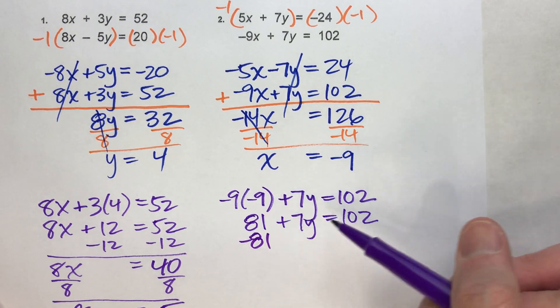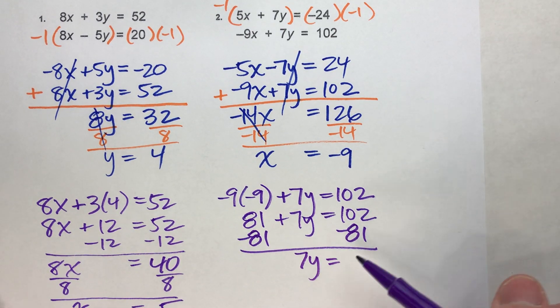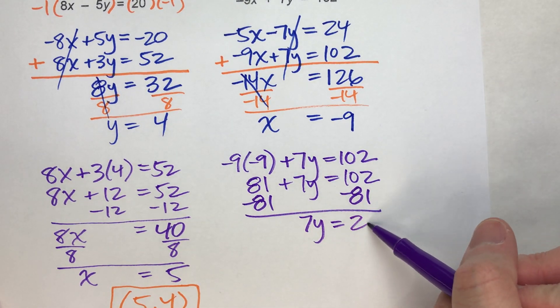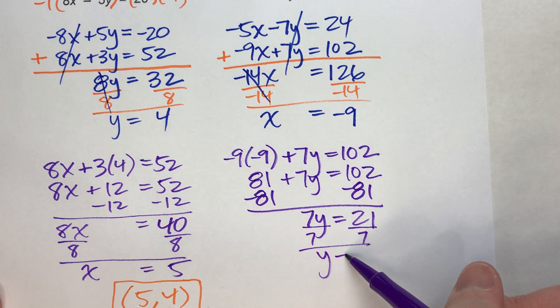So subtract 81 on both sides. 7y = 21. Divide both sides by 7. I just found y, 3.